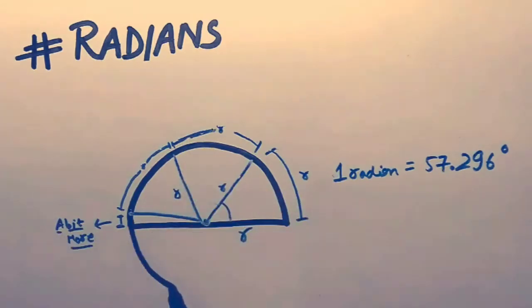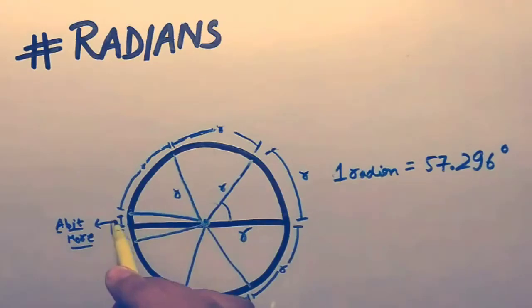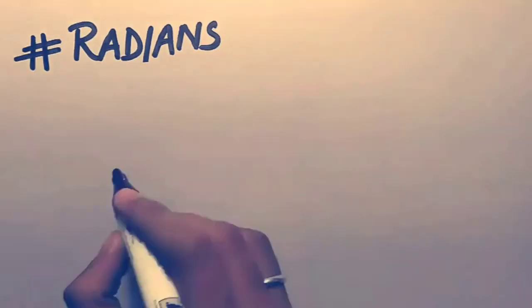One radian is equal to 57.296 degrees. One radian is said when a circle of radius r makes a segment of perimeter equal to its radius. Thus, for every circle, one radian is always the same.